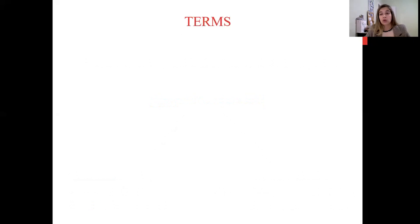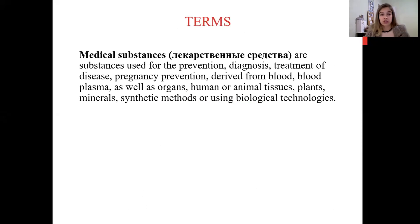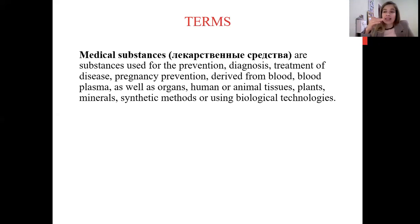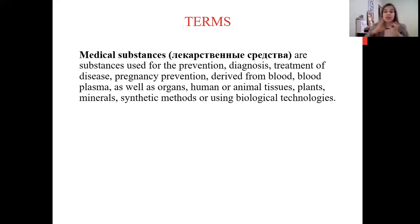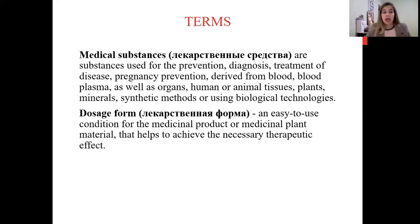Now some terms useful for your first pharmacology classes. Medical substances are substances used for prevention, diagnosis, and treatment of disease, pregnancy prevention, and so on — derived from blood plasma, organs, human or animal tissues, plants, minerals, and so on. Importantly, a medical substance can contain various different agents — it can be a complex of different molecules which can have some effects.